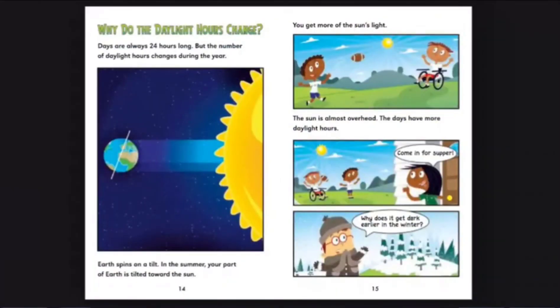Why do the daylight hours change? Days are always 24 hours long. But the number of daylight hours changes during the year. Earth spins on a tilt. In the summer, your part of Earth is tilted toward the sun. You get more of the sun's light. The sun is almost overhead. The days have more daylight hours.